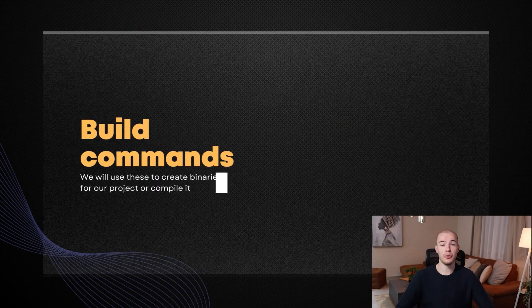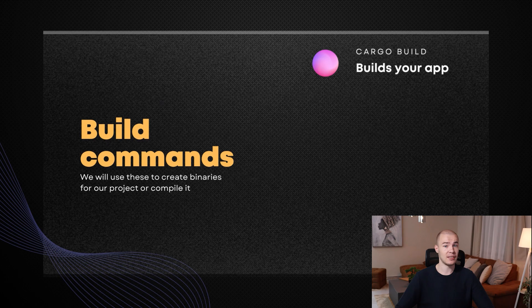Great job! We covered all the general commands. Now it's time to start talking about build commands. The first one on our list is going to be cargo build. What this command does is it builds our project — it creates executables for our project. But before generating them, it's going to check our project for errors, both syntactical and semantical.